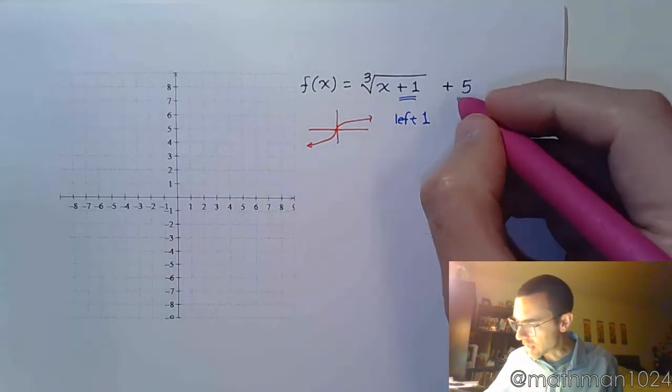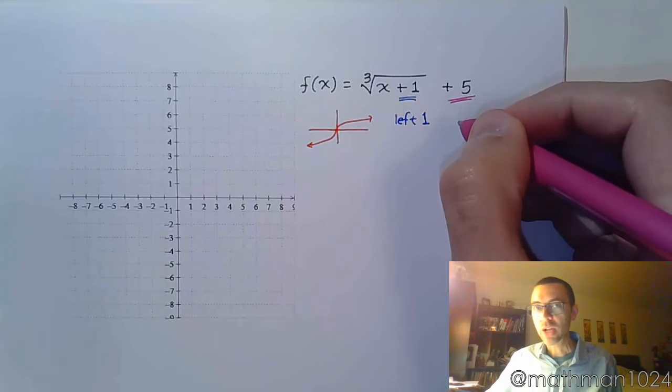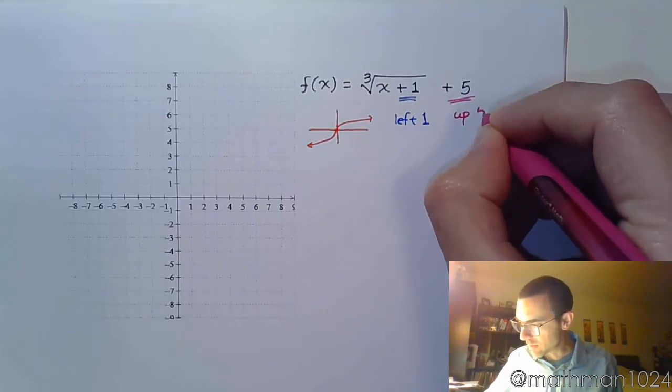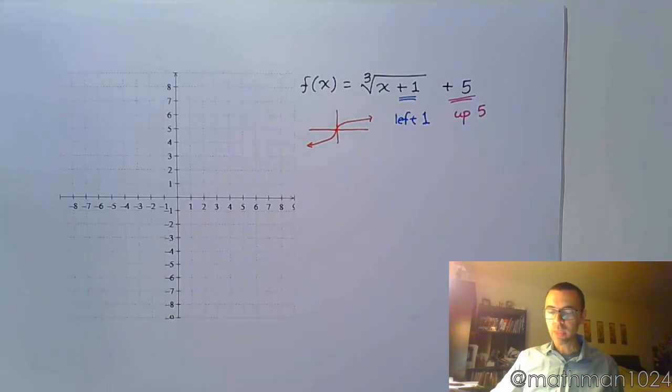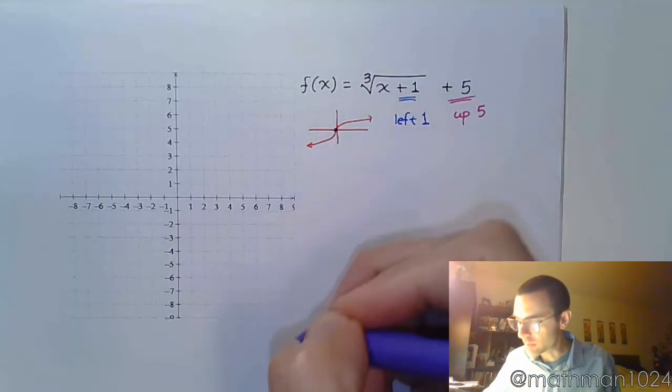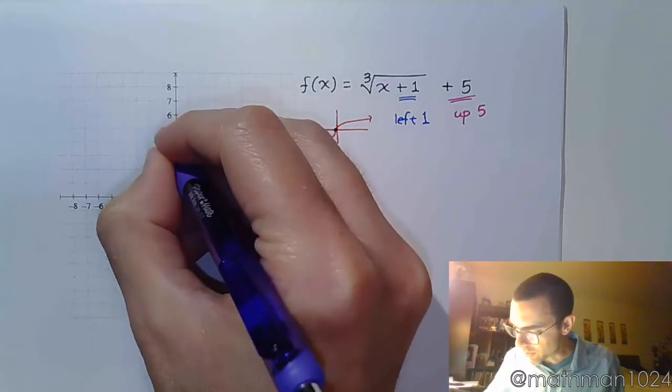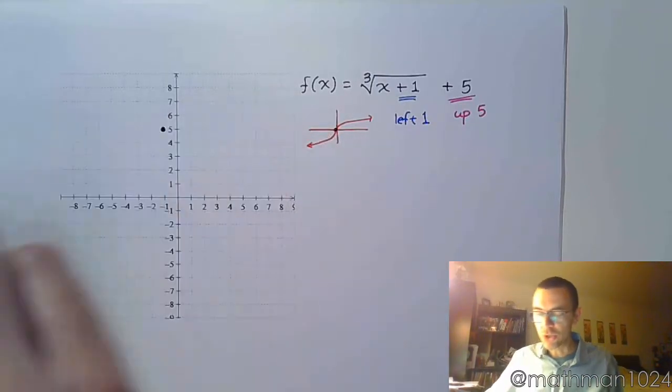And then outside I see a plus 5. Outside, vertical, exactly what you see. So I'm going to go up 5 units. And that's where we start. So the cube root function has its key value right here at the origin. I'm going to take that guy and go left 1, up 5. So that's his new key point.